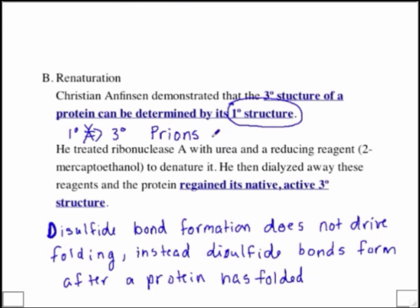Prions cause a group of diseases called transmissible spongiform encephalopathies. Some of these include things like bovine spongiform encephalopathy. That's BSE, also known as mad cow disease.